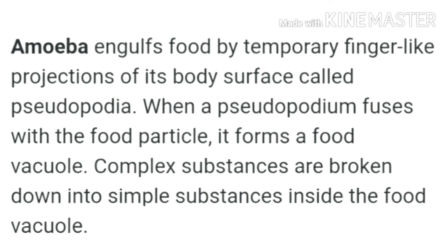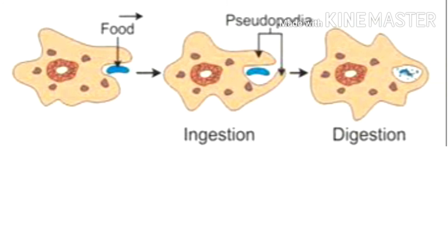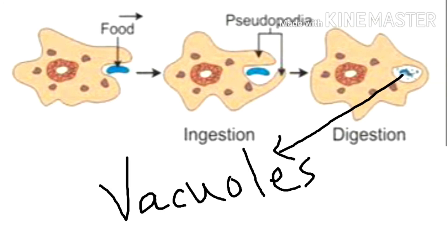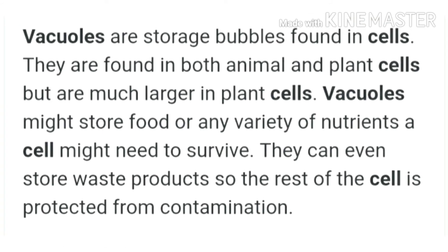Amoeba has an irregular shape which keeps on changing slowly. It has projections on its body called pseudopodia, meaning false feet. Amoeba engulfs tiny particles of food with the help of its false feet. The pseudopodia close to form a small cavity called a food vacuole. Vacuoles are like storage bubbles that store food, nutrients, or even waste products, protecting the rest of the cell from contamination.